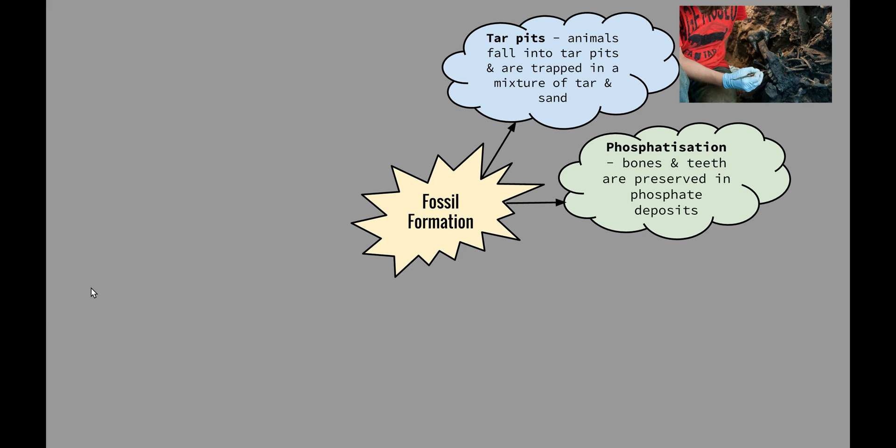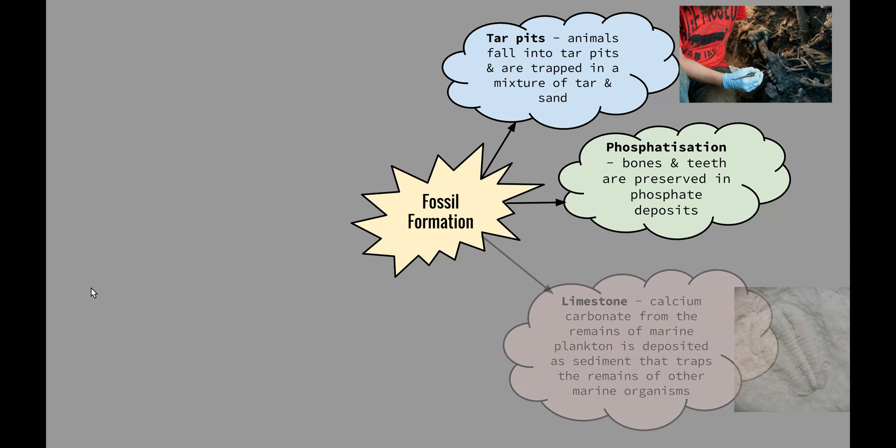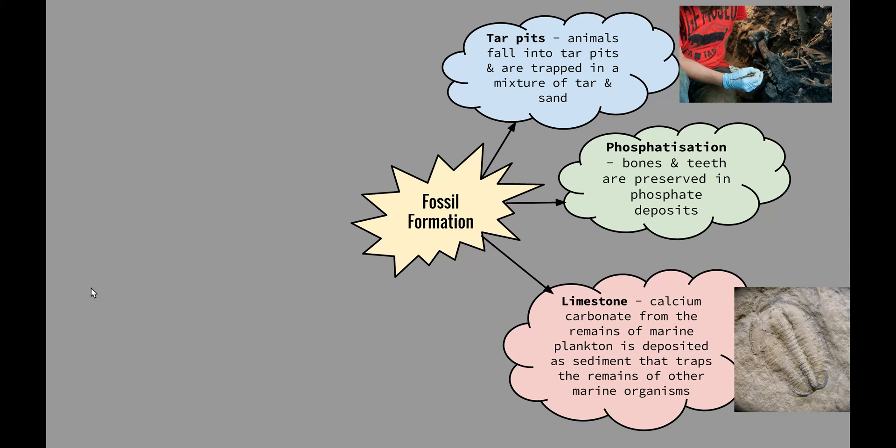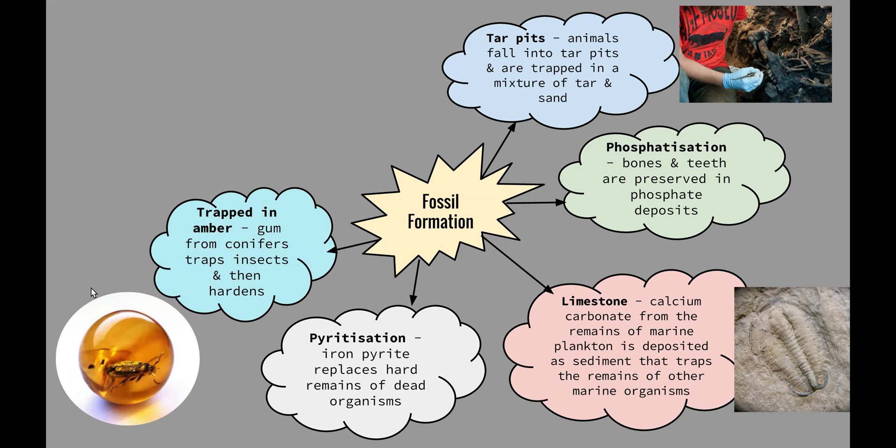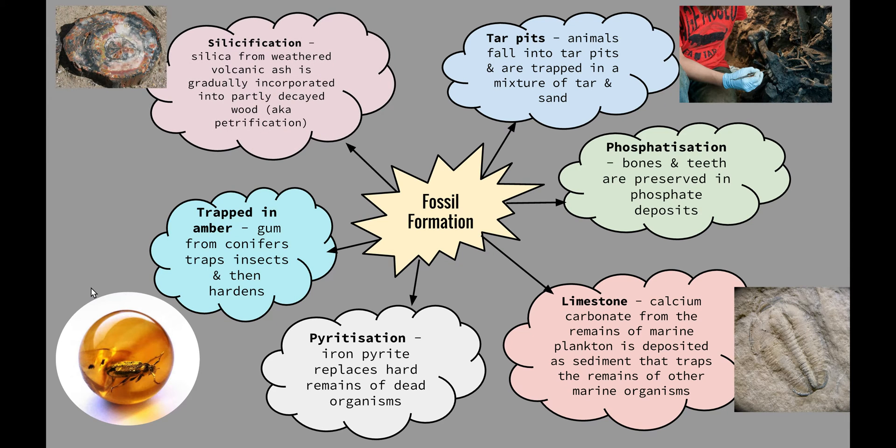We then have phosphatization, where bones and teeth are preserved in phosphate deposits. We have limestone. So calcium carbonate from the remains of marine plankton is deposited as sediment that traps the remains of other marine organisms. Pyrotization, which is where iron pyrite replaces hard remains of dead organisms. Some organisms become trapped in amber, where the amber is gum from conifers, which traps the insects. And then over time, this hardens and the whole organism is trapped inside and basically preserved automatically. And we have silicafication, where silica from weathered volcanic ash is gradually incorporated into partially decayed wood, which is also known as petrification.